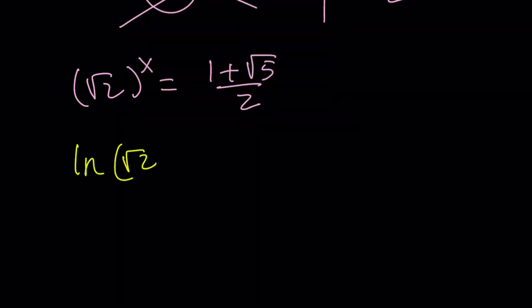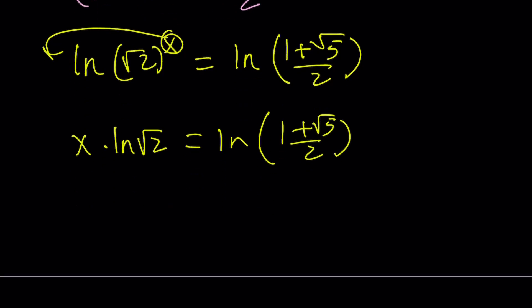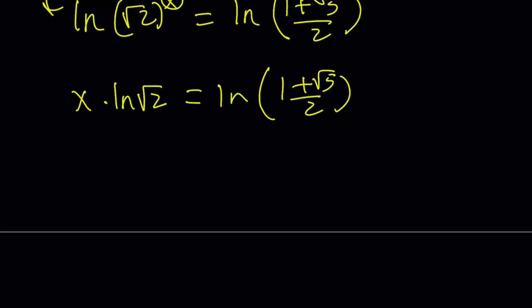So what are we going to do? We have a variable in the exponent. So let's go ahead and ln both sides. You could also use a different base. It doesn't matter. At the end, they're going to be equivalent. So this x, we can bring it down. Write it as x times ln square root of 2 equals ln 1 plus root 5 over 2. And then by dividing both sides by ln root 2, you'll get the answer. So x can be written as ln 1 plus root 5 over 2 divided by ln root 2.